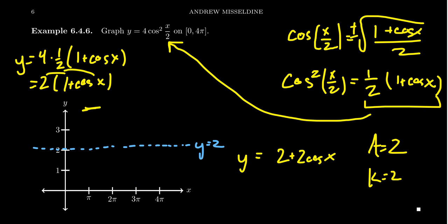And since it's a cosine function, we should start at its maximum. No reflection going on here. So your maximum here is going to be at 4, the minimum will be at 0.